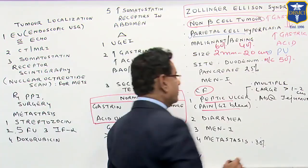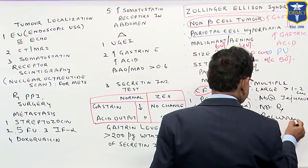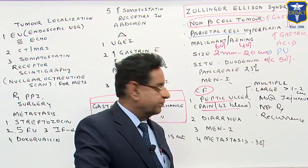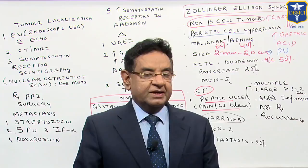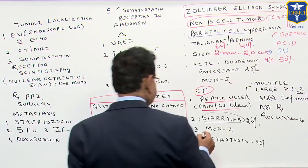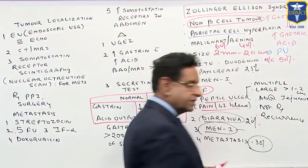Ulcers not responding to treatment or recurring after treatment are strong clues that the patient may have Zollinger-Ellison syndrome. Diarrhea also occurs because the large amount of acid neutralizes lipase, producing diarrhea. In 20 percent of cases, diarrhea may precede the abdominal pain. The patient may also come with MEN1 syndrome features including parathyroid involvement, and metastasis occurs in around 30 percent of cases.